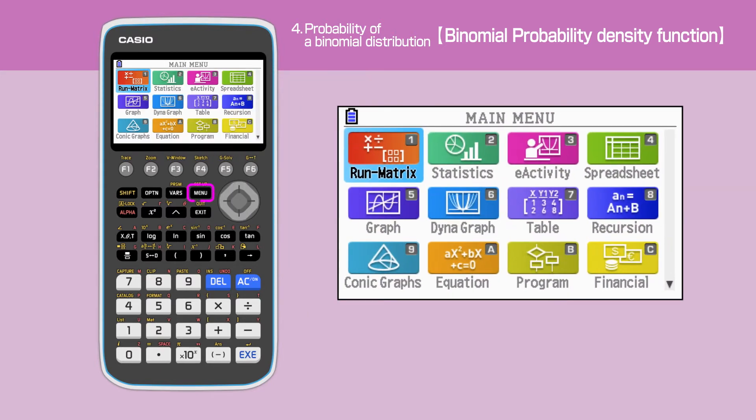Press the menu key to open the main menu, then move the cursor or press 2 to select the statistics function.